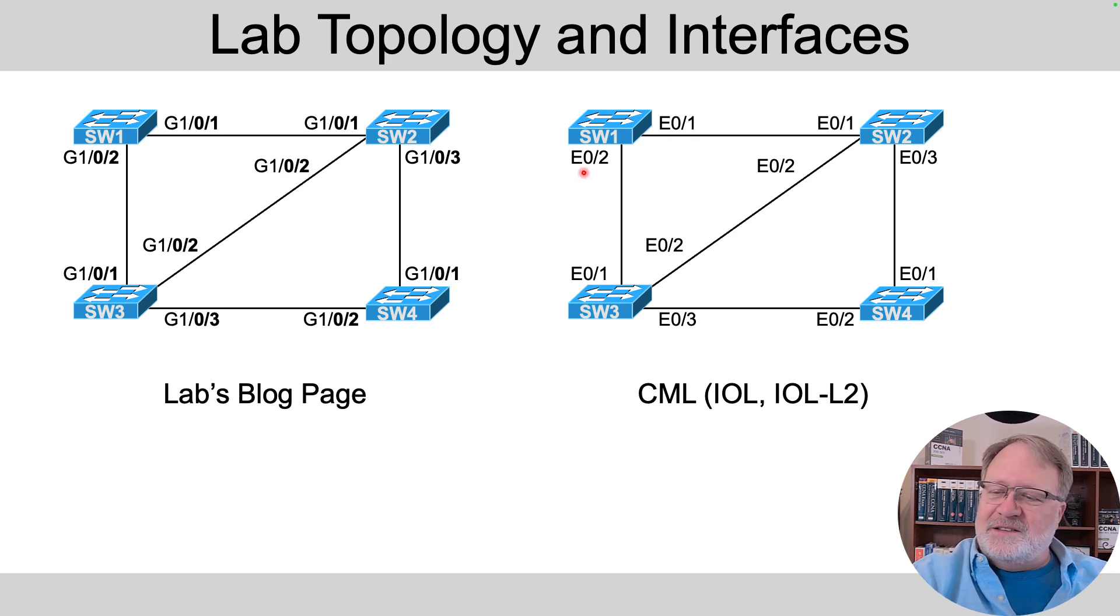And use those as the Ethernet interface IDs over here in the CML figure. So if you were to just compare the two, you'd see gig 1/0/1, Ethernet 0/1, gig 1/0/2, Ethernet 0/2, and so on throughout the design. So it should be pretty easy to translate between the two.